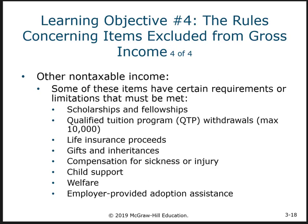Qualified tuition programs — commonly called 529 plans and usually sponsored by the state — allow you to put money in when children are young, and when they reach college age you can pull it out. Withdrawals used for college expenses are not income, at least up to $10,000.